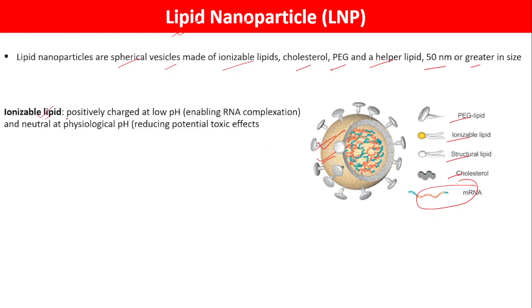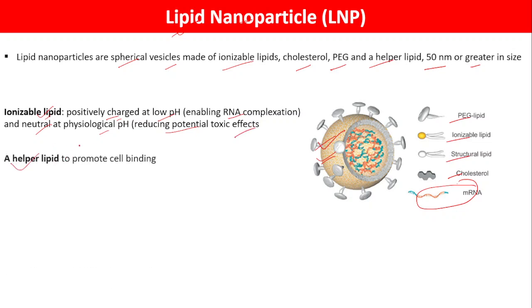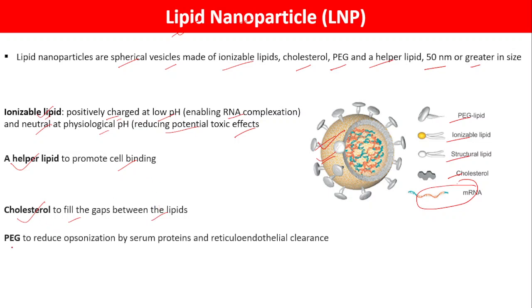Ionizable lipids are very important because they are positively charged at low pH, therefore they enable RNA complexation, and they are neutral at physiological pH, thereby reducing potential toxic effects. A helper lipid is very important because it promotes cell binding. Cholesterol is very important because it fills the gap between the lipids. And PEG is also very important because it reduces opsonization by serum proteins and reticuloendothelial clearance.